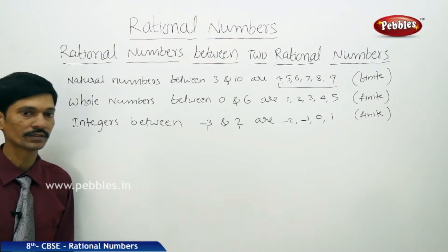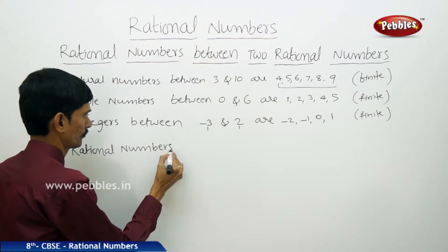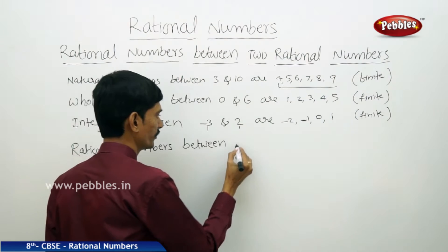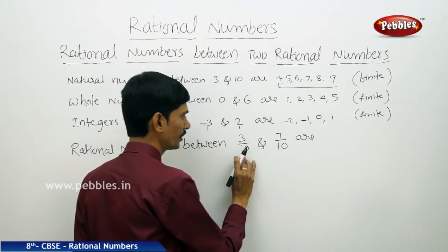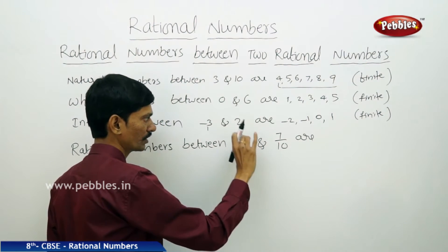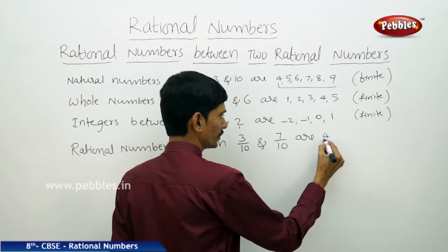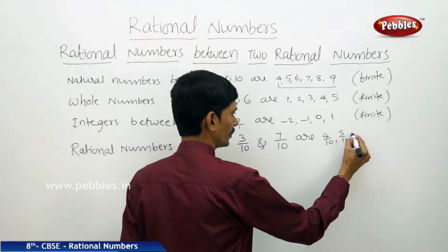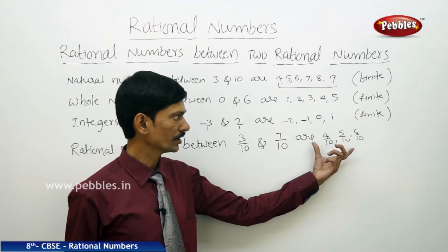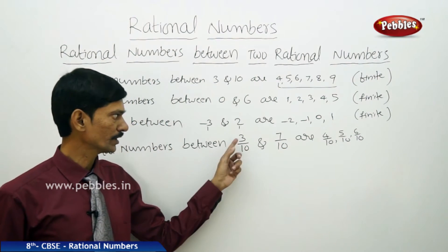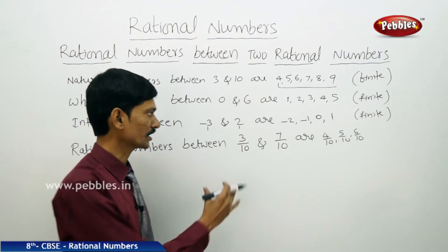Now let us see how many rational numbers are between two given rational numbers. Rational numbers between 3 by 10 and 7 by 10 — here the denominators are equal. Comparing numerators 3 and 7, we can find 4 by 10, 5 by 10, and 6 by 10. But is it correct that only these 3 rational numbers exist? Let us find whether the number of rational numbers between two rational numbers is finite or infinite.